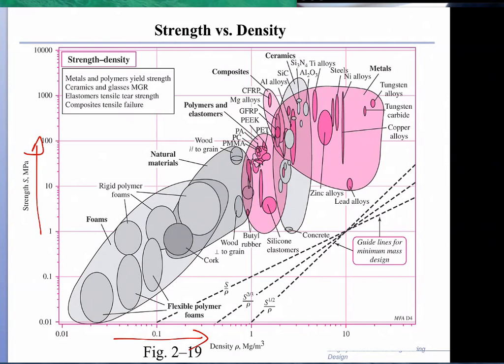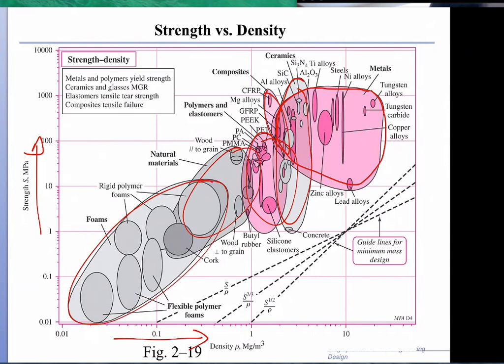We group the families into metals, ceramics, composites, polymers, and natural materials and foams. They group nicely within certain ranges of strength, combination of strength and density.